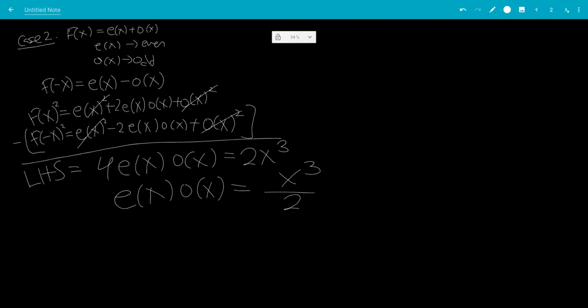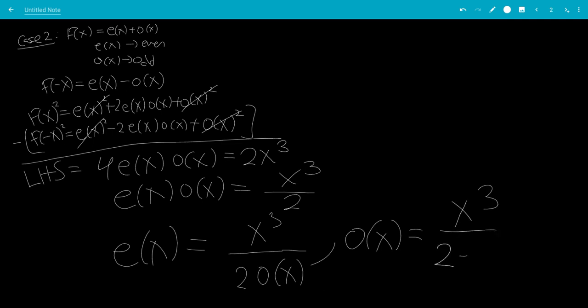And so in this case, let's let e(x) be the function we're solving for. So this would be x³/(2o(x)). Or we can do o(x) being x³/(2e(x)).